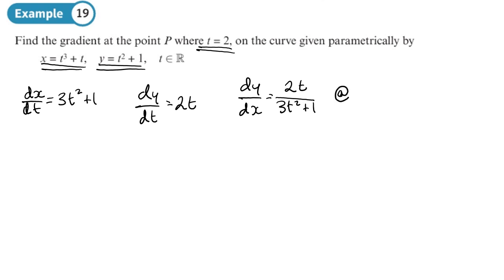And we want to find the gradient at point P when t is 2. So all we need to do is substitute 2 into that. So we will have 2 times 2 over 3 times 2 squared plus 1, so that's 4 over 3 times 4, 12 plus 1, 13. Okay, so at point P the gradient is 4 over 13.